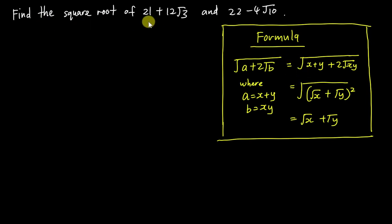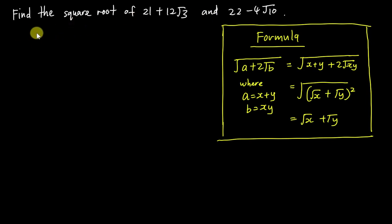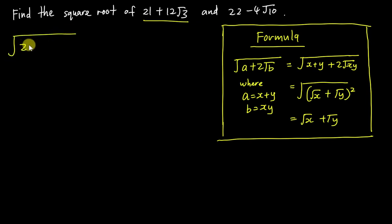Basically they ask us to find the square root of 21 plus 12√3, or 22 minus 4√10. So let's try example number one first: find the square root of 21 plus 12√3.